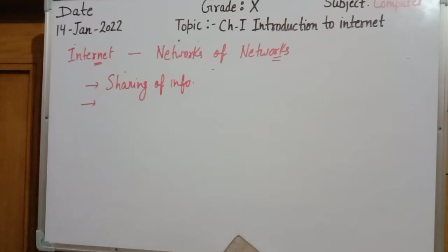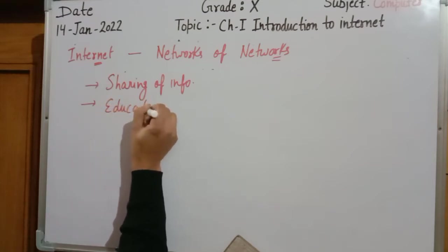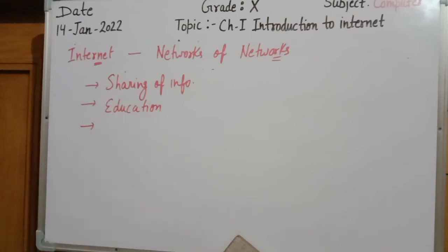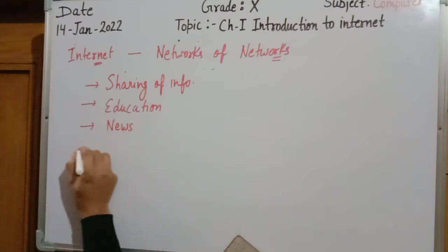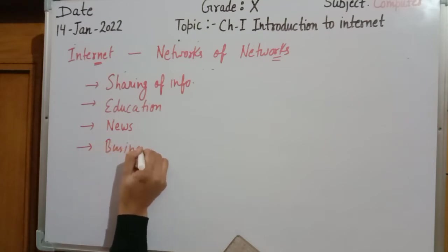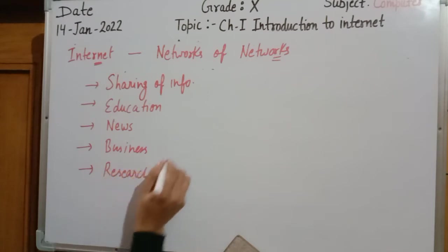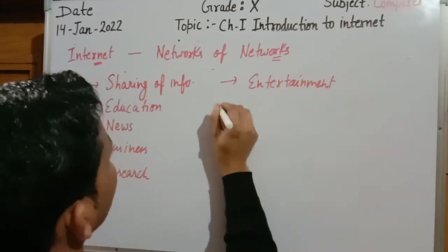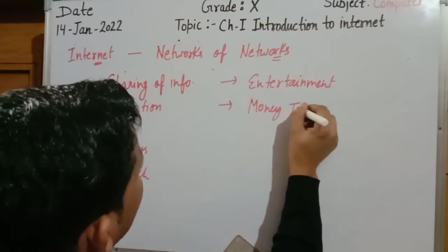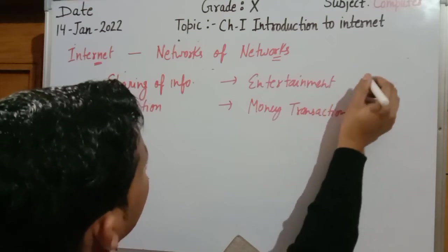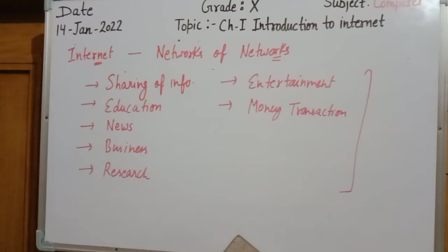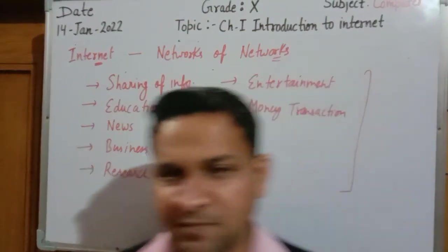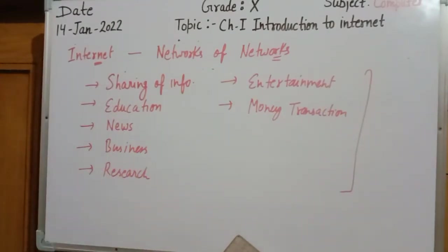The second use is that internet can be used for educational purposes — we can use it as an education tool using different software. Third, it can be used for transfer of news and broadcasting. Fourth, it can be used for business purposes. Fifth, for research. Sixth, for entertainment. Seventh, for money transactions, also known as online business. There is no area where we cannot use the internet.